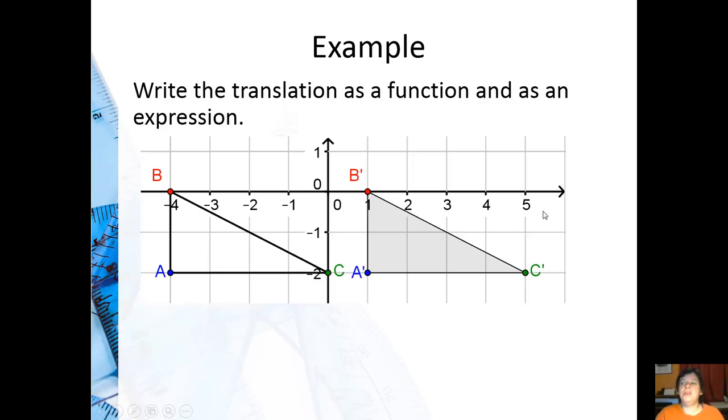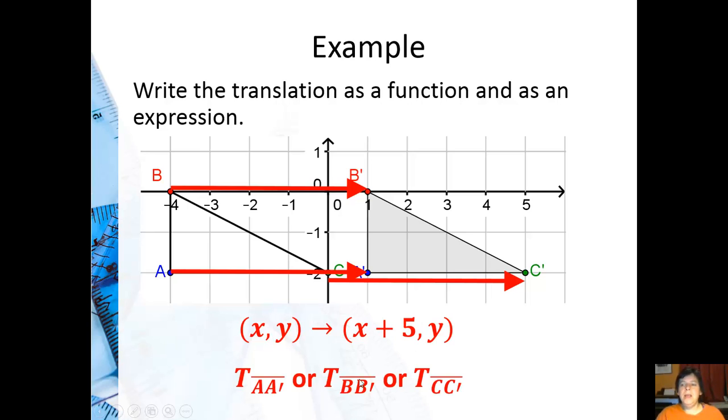So, in this example, we're going to write the translation as a function and as an expression. You can see that A moves over 1, 2, 3, 4, 5 units. So, and so does B, and so does C. So, I can say (x, y) goes to (x plus 5, y). There was no change vertically, and that's why the y did not change. I can also say that it's the capital T with the original point and the final point. A to A prime, B to B prime, or C to C prime. Any of those would work.